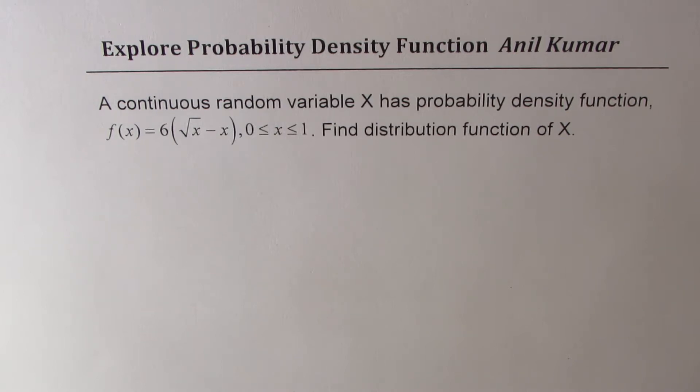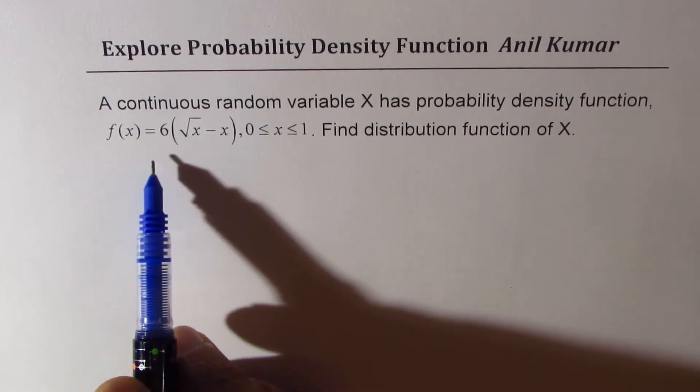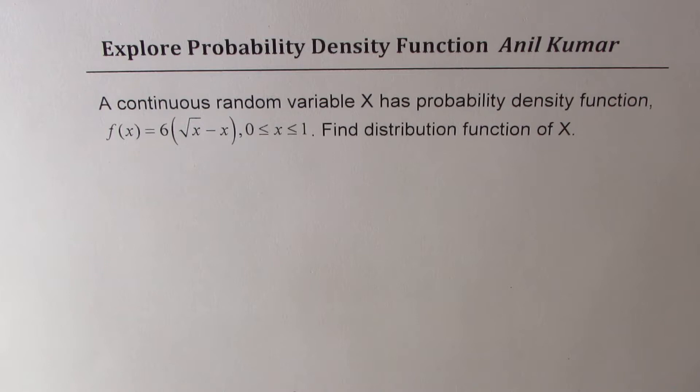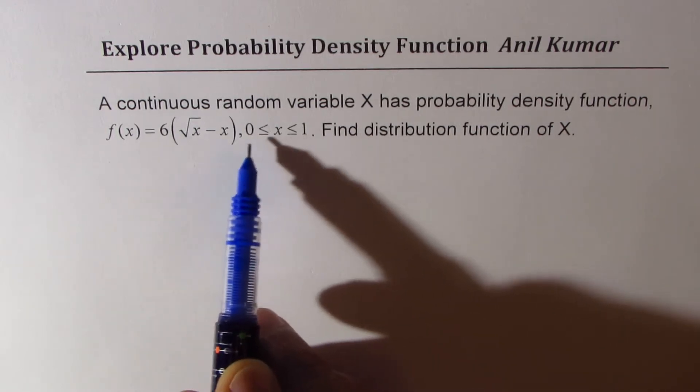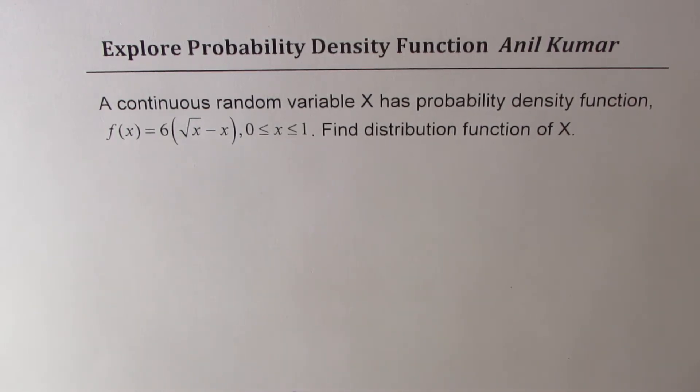So the question here is: a continuous random variable x has probability density function f(x) equals 6 times square root of x minus x, where x is between 0 to 1. Find distribution function of x.